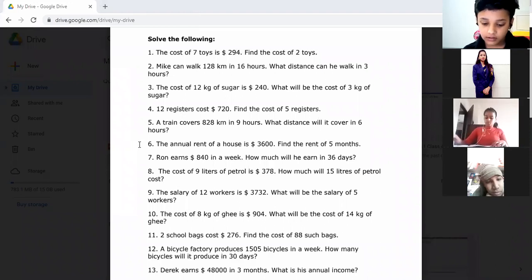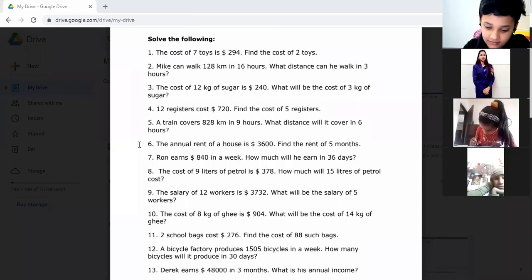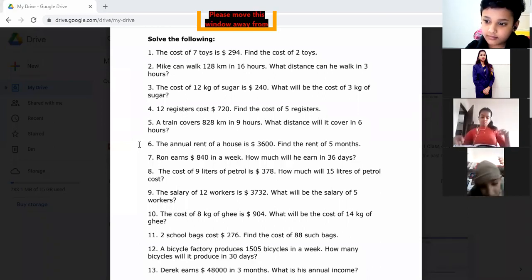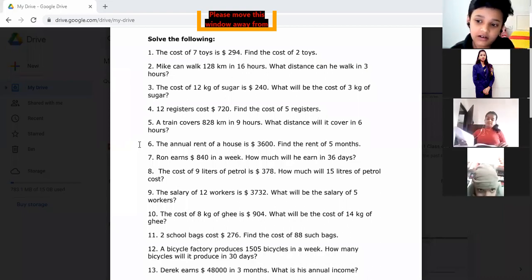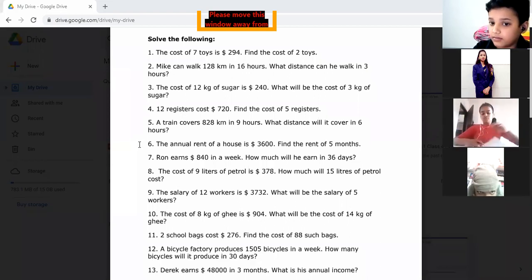A train covers... I don't understand fifth question. 828 divided by 9. So 9 times 9 is 81, and 9 times 2 is 18, so the answer is 92.